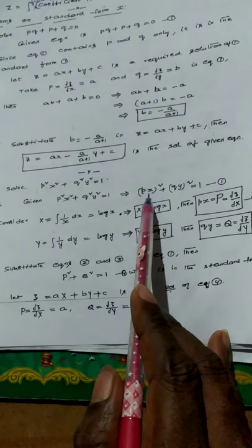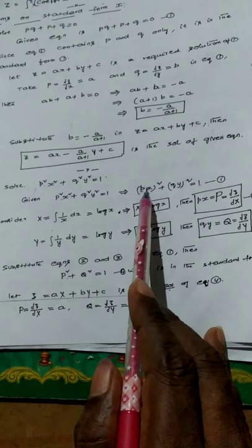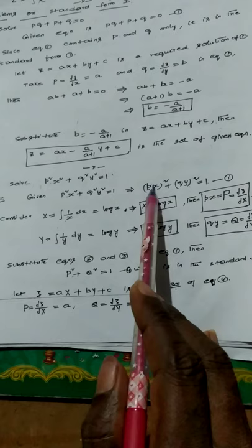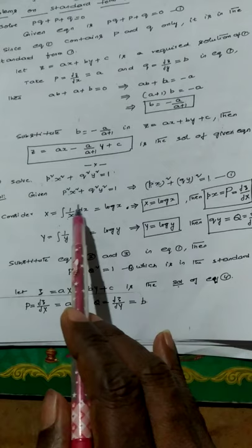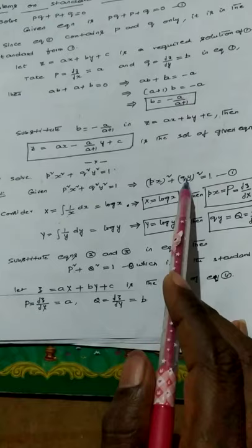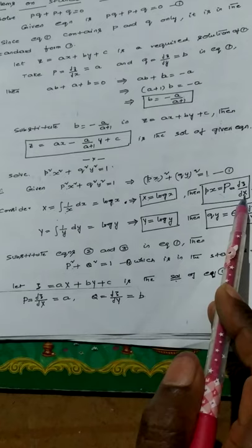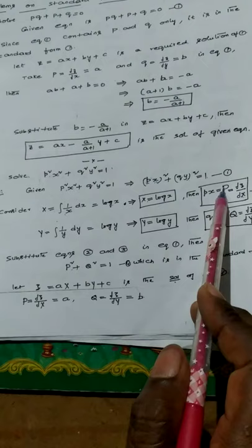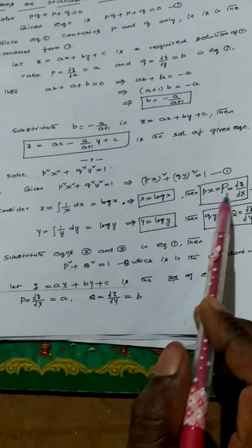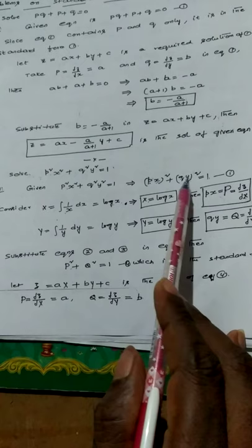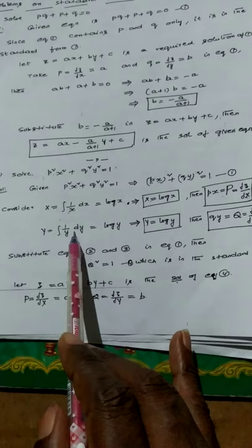To merge small x into capital X and small y into capital Y: capital X is the reciprocal of the factor of x in the quotient of P. The quotient of P is x, so its reciprocal is 1/x. Capital X = ∫(1/x)dx = log x. By taking capital X = log x, small p·x is changed to capital P, where capital P = ∂z/∂X. We do not change small z, so only capital X replaces small x in the notation.